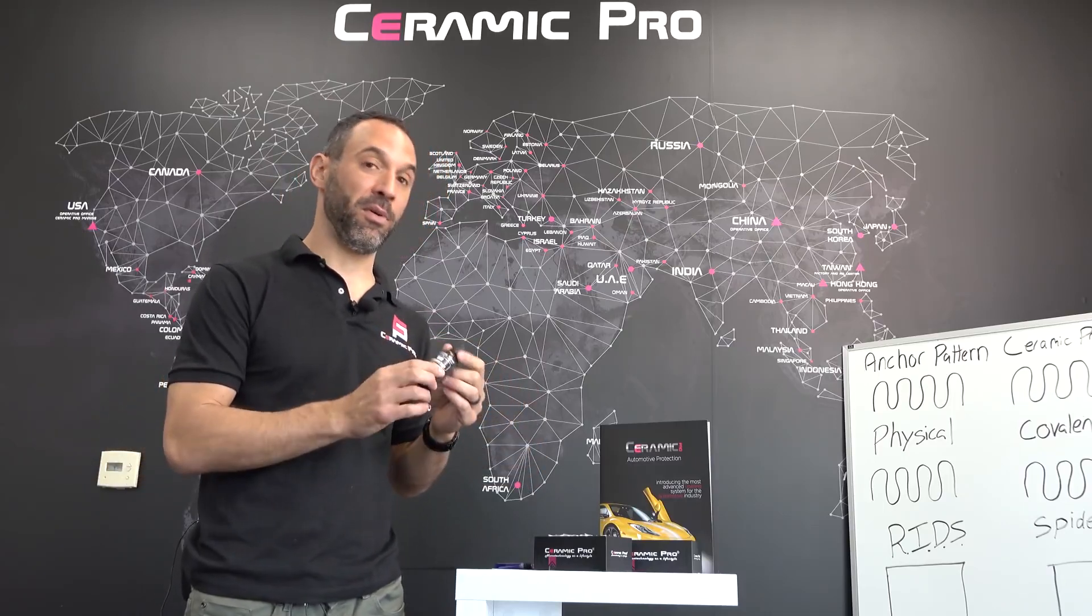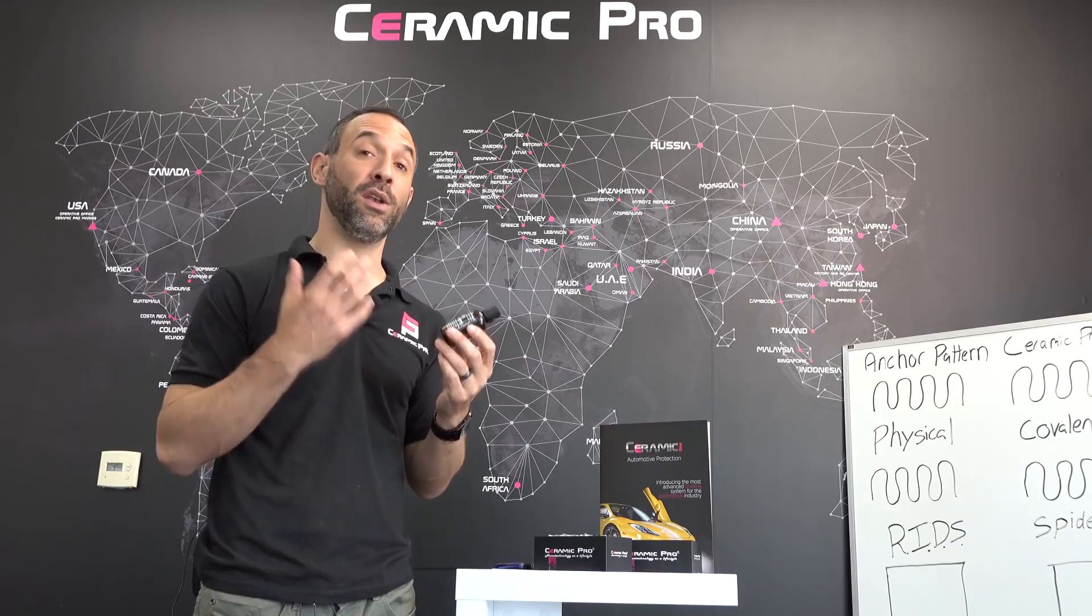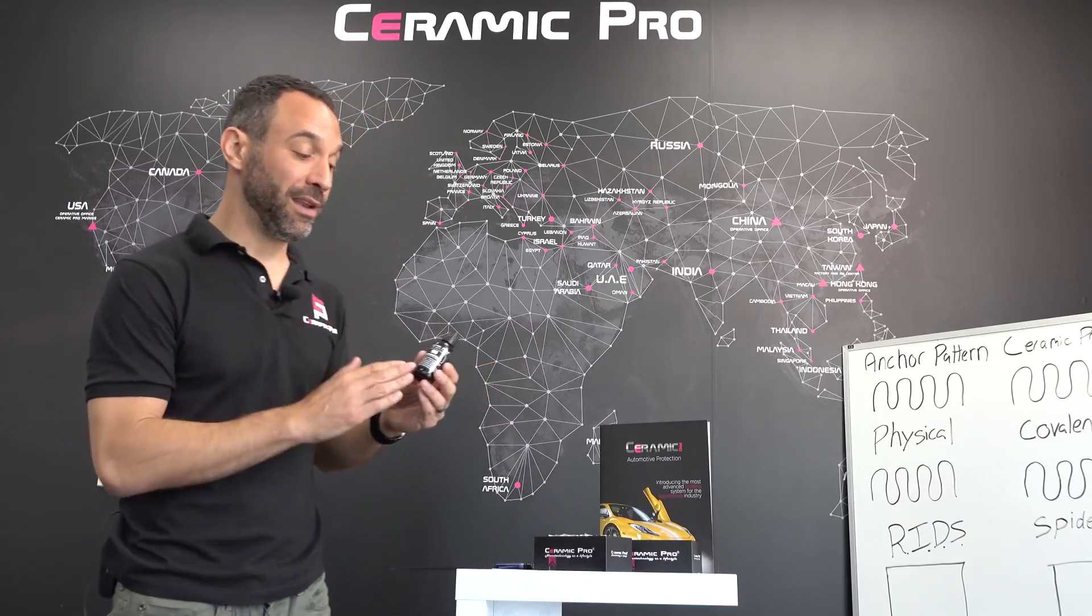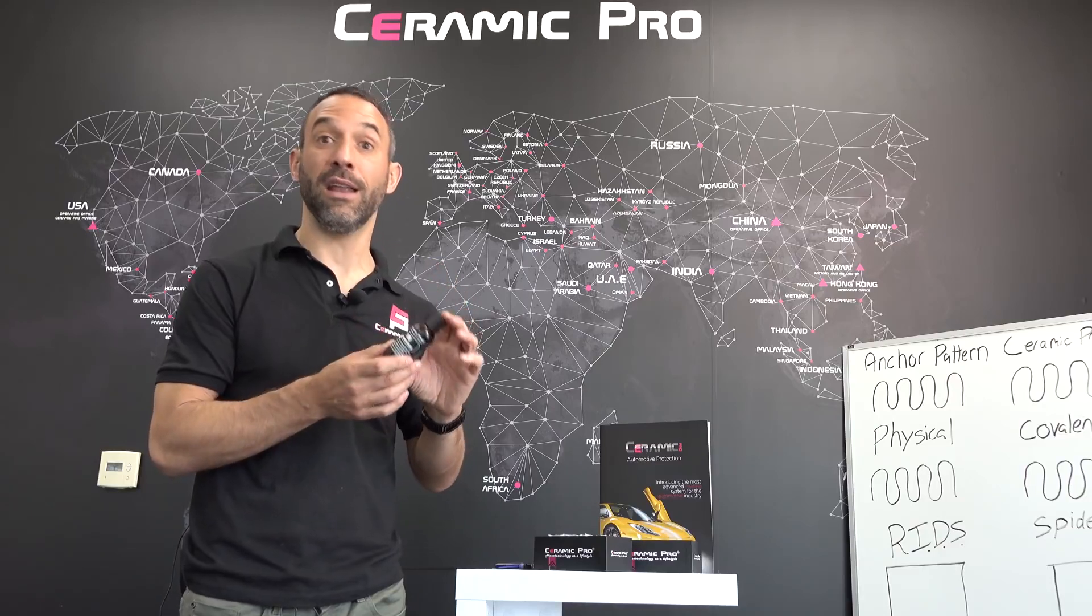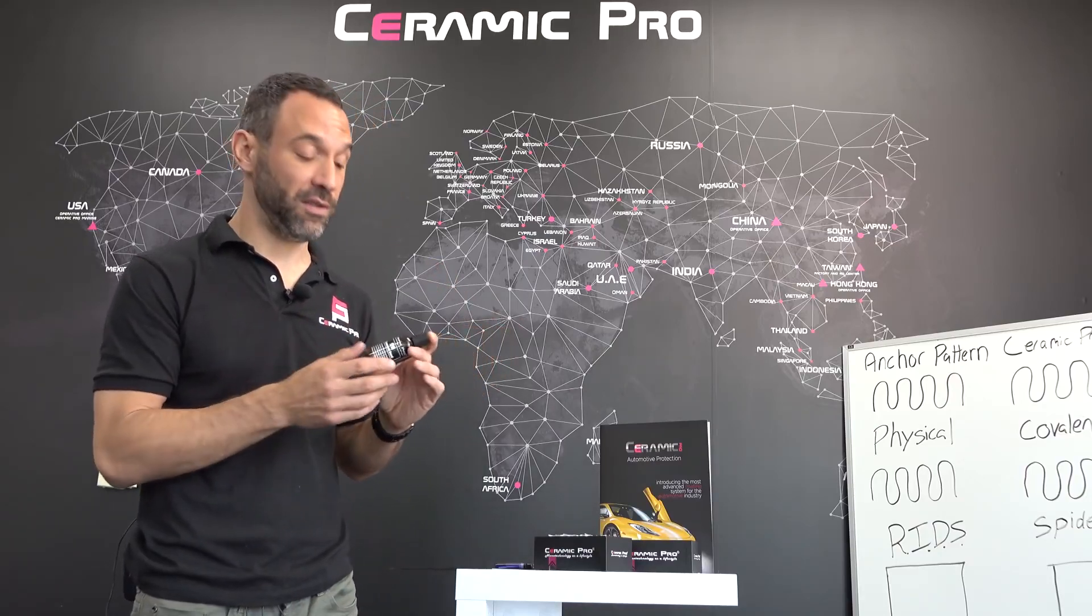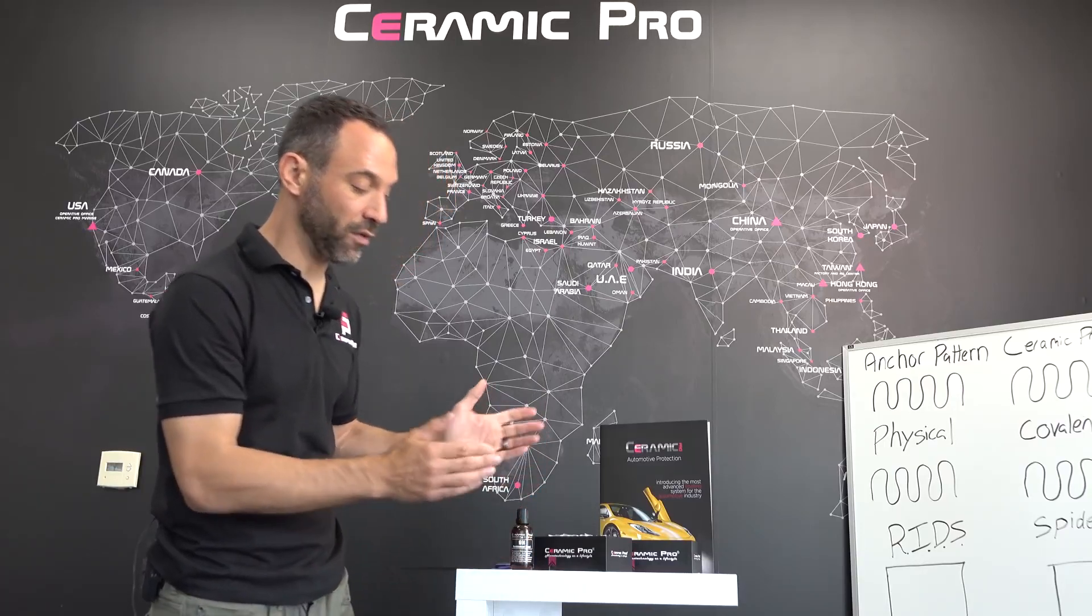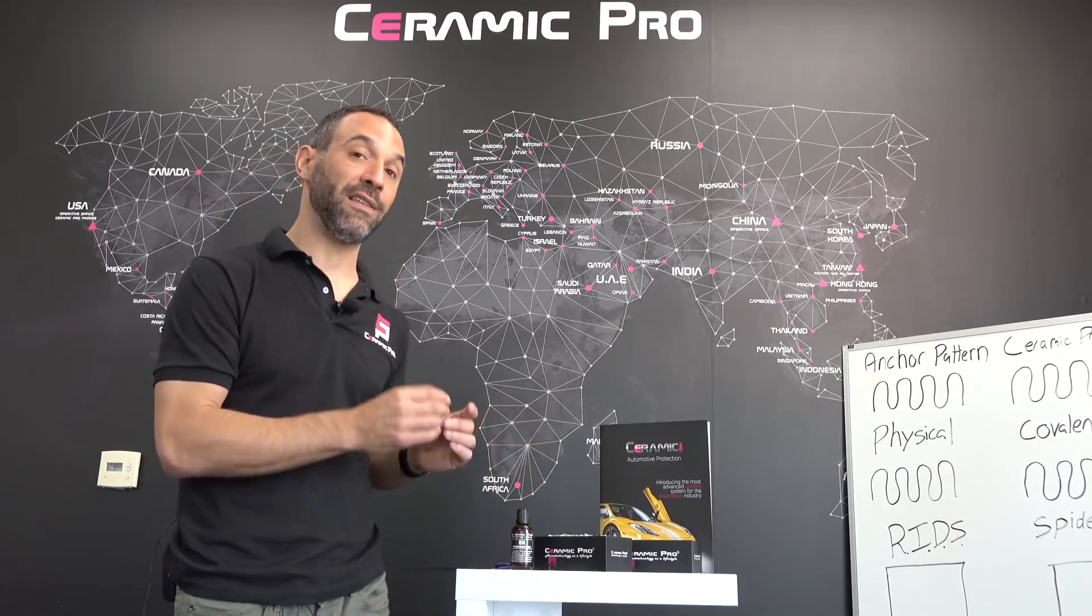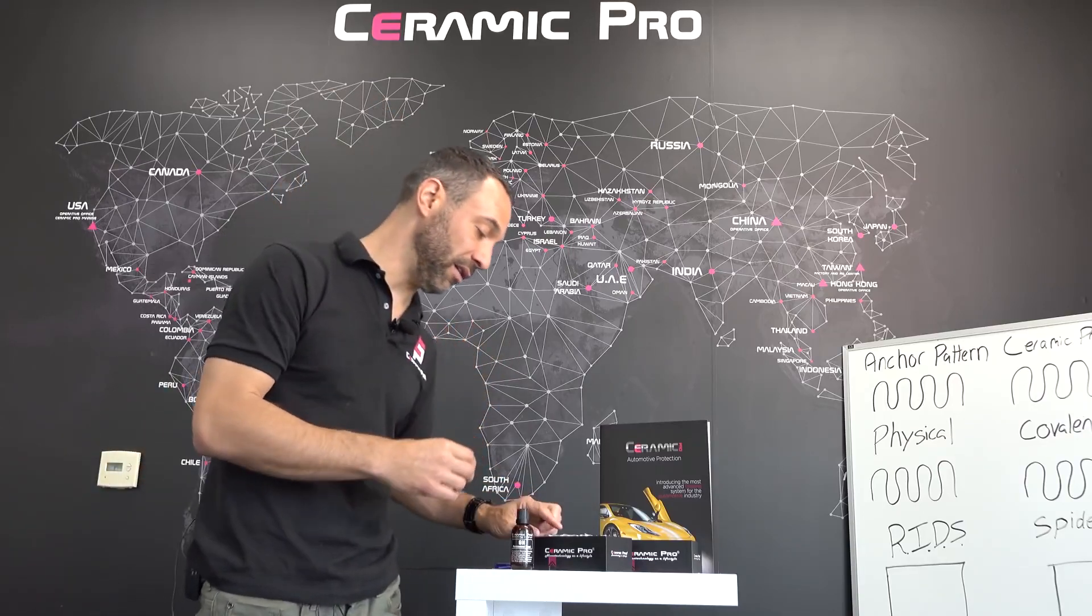So we've got Ceramic Pro 9H, this is the flagship product, this is what most people know us for. To explain to you what's in this bottle, there's silica dioxide and titanium dioxide and the secret sauce, the solvents. If I was to chop off the top of this bottle and expose it to air, basically over time it would dry to about 65% hard glass. I want to show you an example of what that looks like.